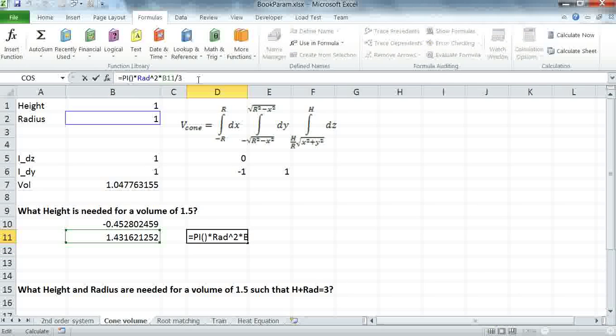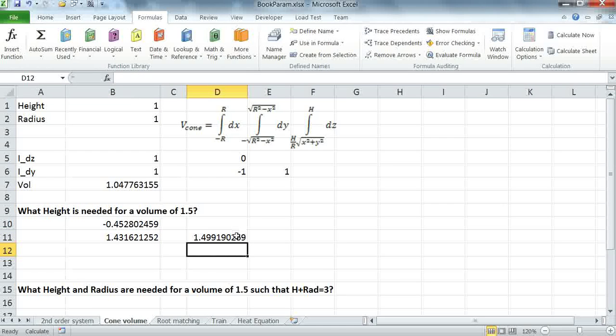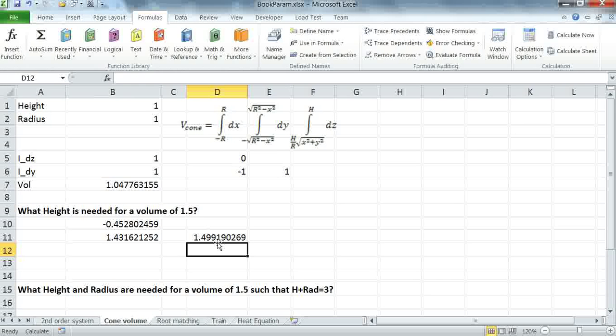We can see, actually, by doing this, we have lost a little bit of accuracy now. We're only accurate to about three decimal places.